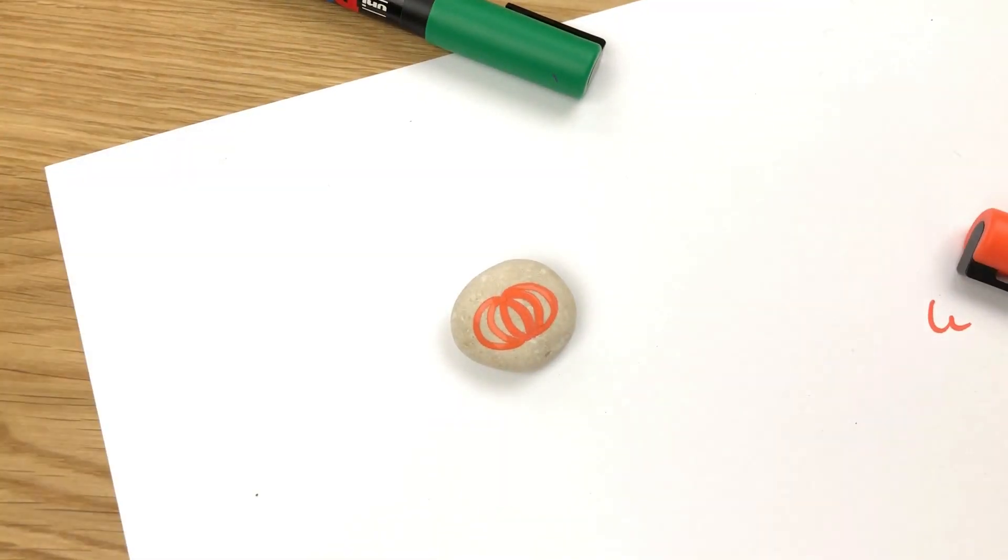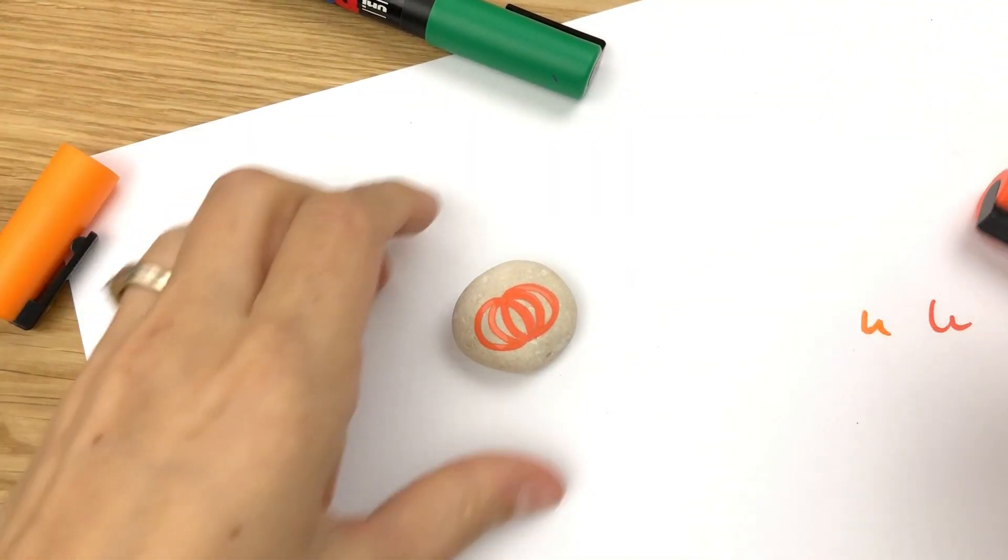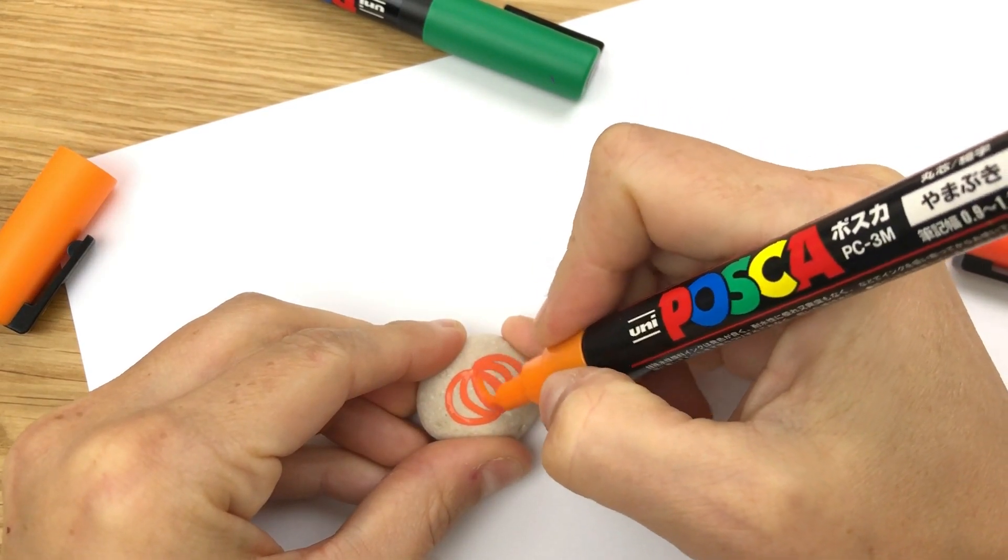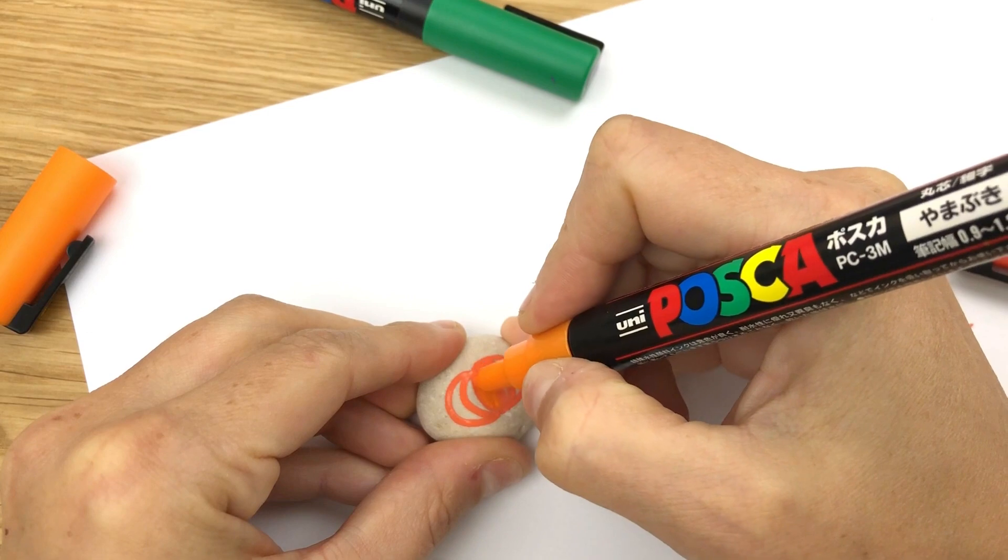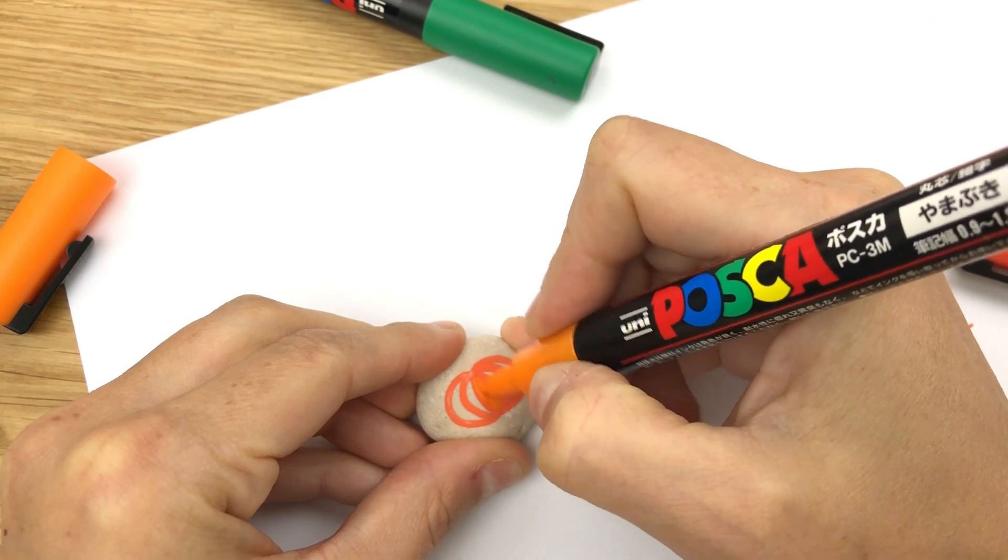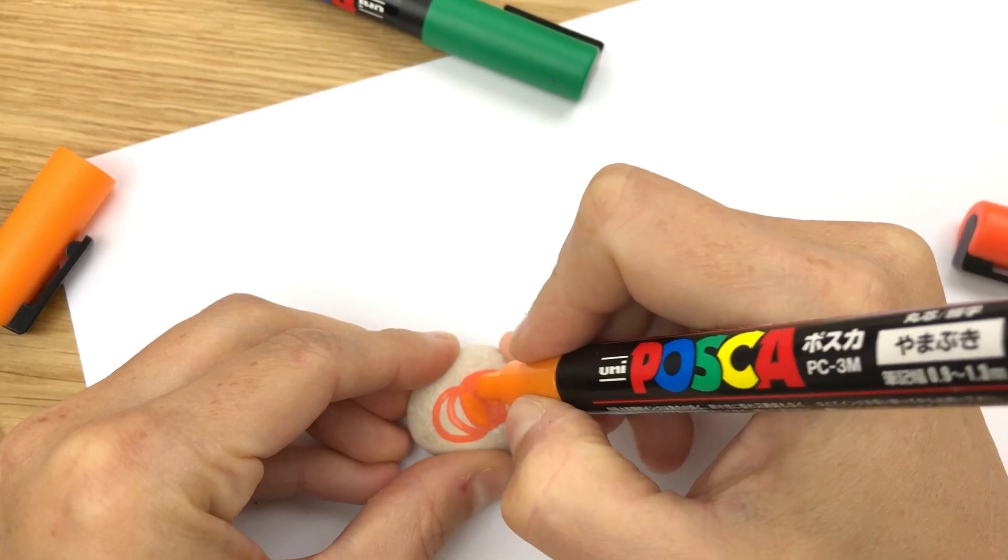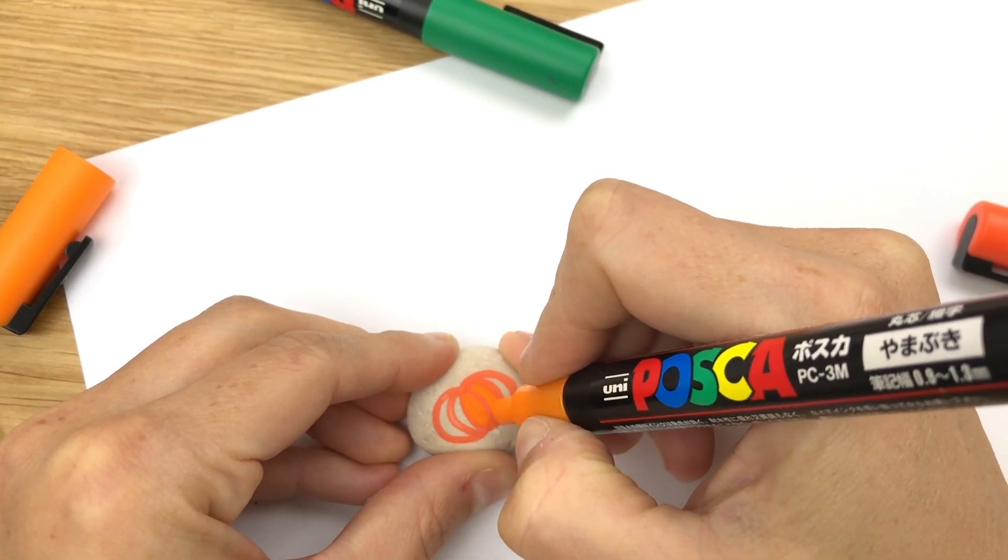So we're just gonna take and go right away in with our lighter orange color and fill these shapes in. I'm gonna fill in the center one here and go right up to that darker orange line, and then I'm gonna wiggle off just in case I get some of the dark orange on here.